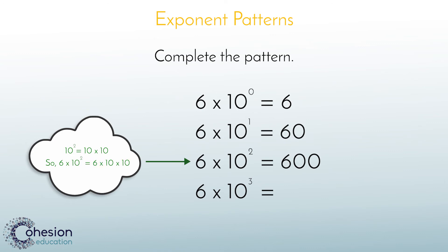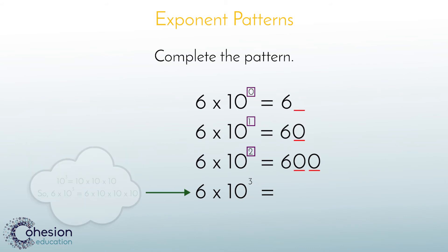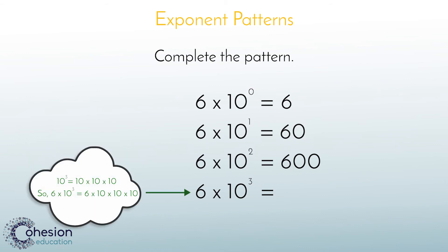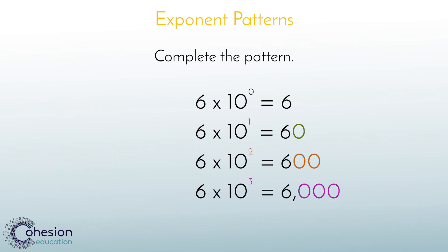You can see as the pattern increases, so do the number of zeros at the end of the product. Lastly, we have 6 times 10 to the third power, which is 6 times 10 times 10 times 10 for a product of 6,000. This pattern helps students see the connection between the number of zeros in the product and the value of the exponent.